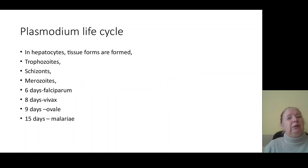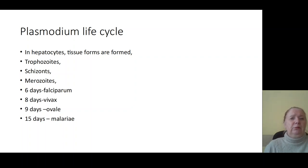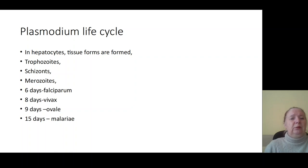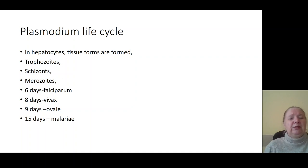In hepatocytes during tissue schizogonia, formation of trophozoites and schizonts and merozoites occurs. The phase of tissue schizogonia lasts: in Plasmodium falciparum — 6 days, in Plasmodium vivax — 8 days, in Plasmodium ovale — 9 days, in Plasmodium malaria — 15 days.